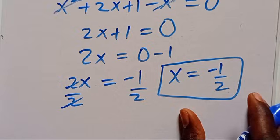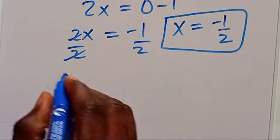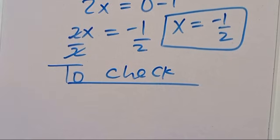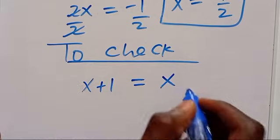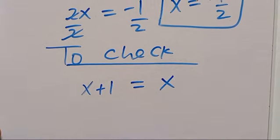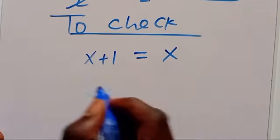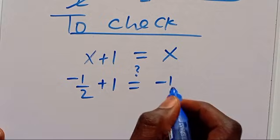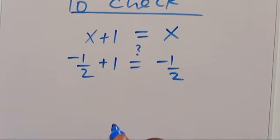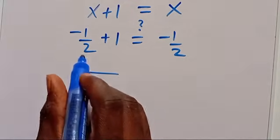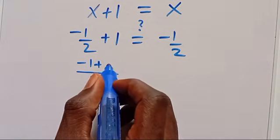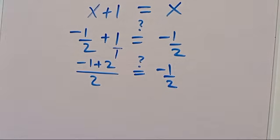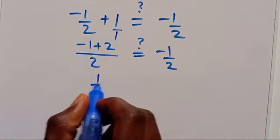This is the value of x. To check, recall that x plus 1 equals x. Substituting x equals minus 1 over 2, we get minus 1 over 2 plus 1 on the left side. The left side gives minus 1 plus 2 over 2, which is 1 over 2. But is that equal to minus 1 over 2? It is not equal.